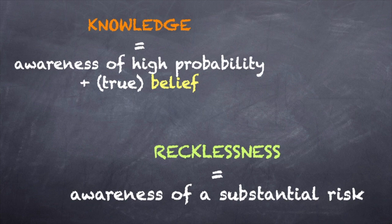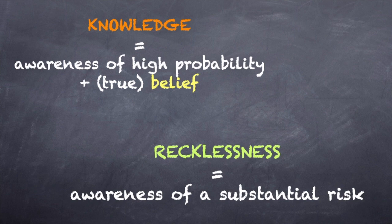The difference between the middle pair of culpability concepts — knowledge and recklessness — sometimes befuddles even judges. The obvious difference is that knowledge necessarily involves true belief while recklessness does not. The reckless actor is aware of a substantial risk but need not believe that that risk will ripen into a bad result. The Model Penal Code defines recklessness in terms of awareness of a substantial and unjustifiable risk. Knowledge also involves awareness of a high probability of something being so, but for something to be known it must be so and it must be believed so. In our next video we look at a case in which a court struggled with the meaning of the concept of knowledge.